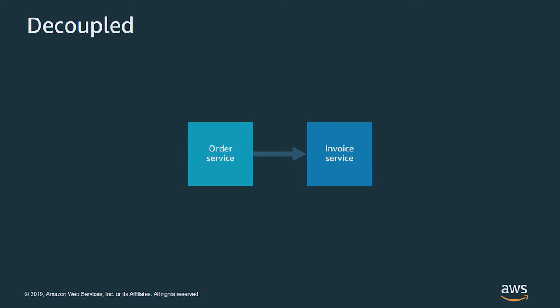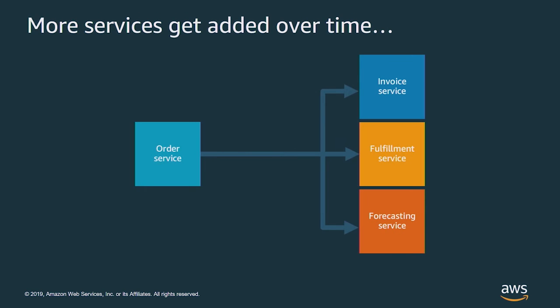Now this works fine when you've got a very simple system like this. It looks decoupled and it's really two separate systems. But what happens when we add more services that integrate with the order service? The order service has more responsibilities. Downstream services publish an API and the order service becomes responsible for talking to each of them. The order service has to understand retry semantics for each service and bundle an SDK for each.